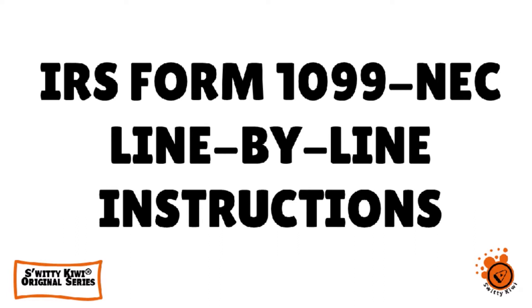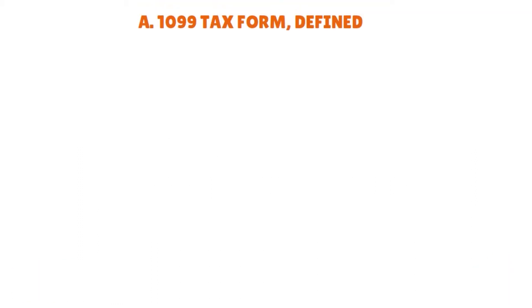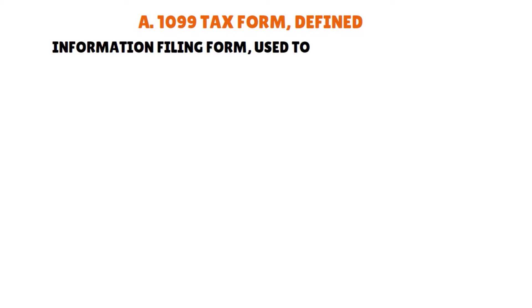If you're getting started as a freelancer, or your small business is contracting outside help, you've probably heard of IRS Form 1099. But what is it exactly — especially what is Form 1099-NEC — and how do you file it? In today's show I'm going to break down everything for you and explain it line by line. First, let's define the 1099 tax form: a 1099 is an information filing form used to report non-salary income to the IRS for federal tax purposes.